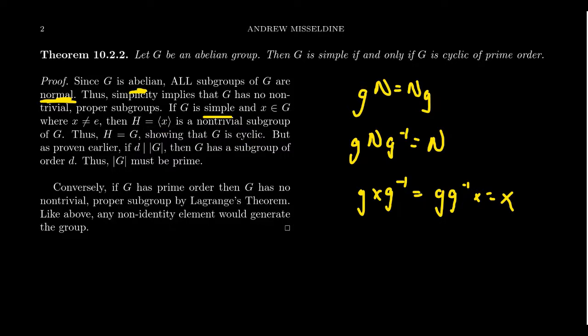This shows G would have to be a cyclic group if it's abelian and simple. Since it's cyclic, we've seen previously that for every divisor of the order of the group, there's a corresponding subgroup. So none of these non-trivial divisors can exist if G is simple, meaning the only divisors of |G| are 1 and itself, which indicates G has prime order.